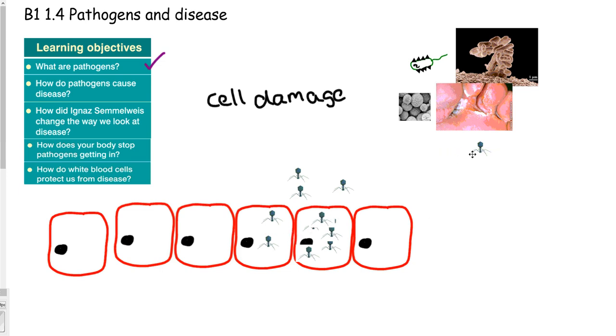This causes massive damage to our cells and our body and can do a lot of harm. So that is how pathogens cause disease. We know that bacteria produce toxins and viruses cause cell damage. Fungi do much the same as bacteria in that they can live off our skin, cause irritation and produce toxins. That covers this learning objective and next we will look at how our body stops pathogens getting in.